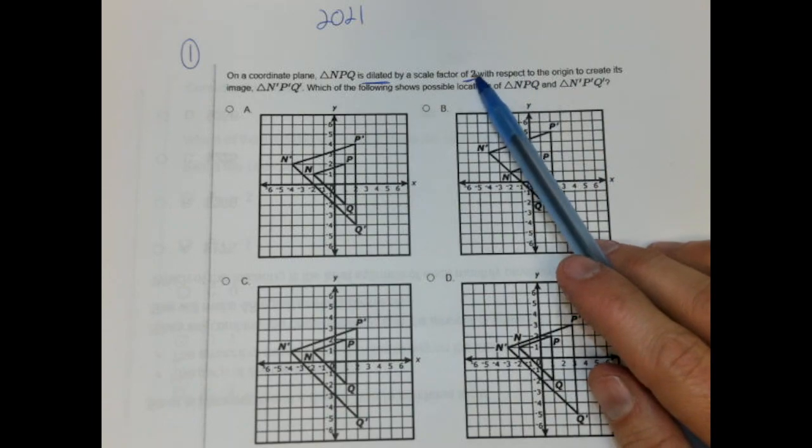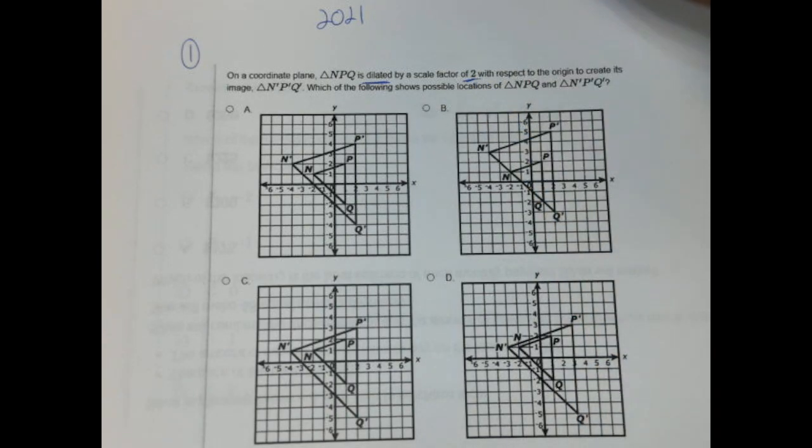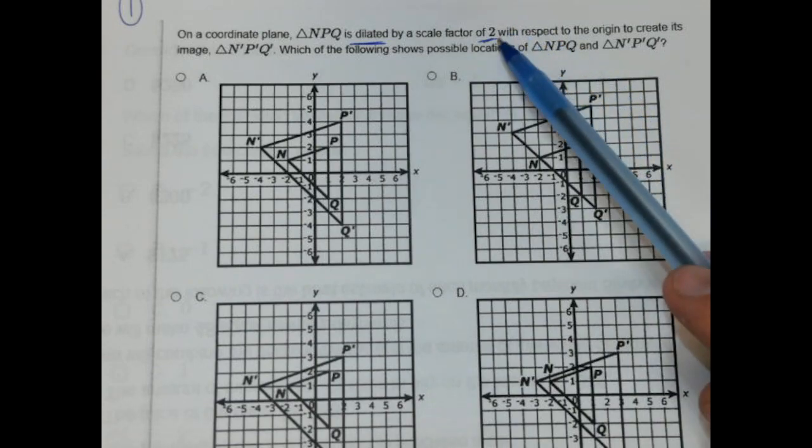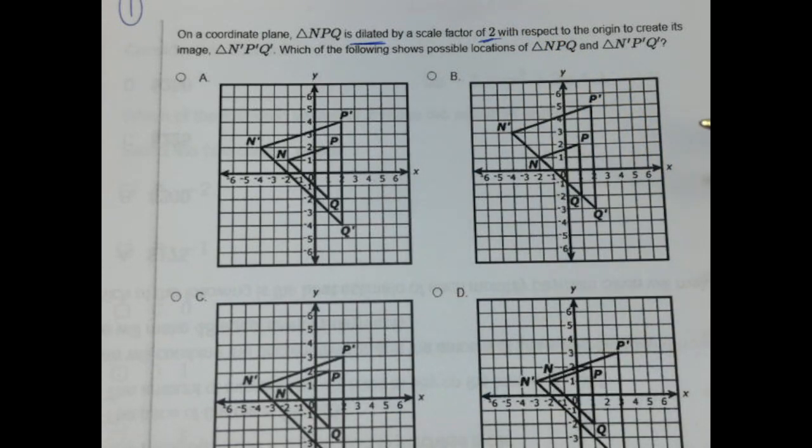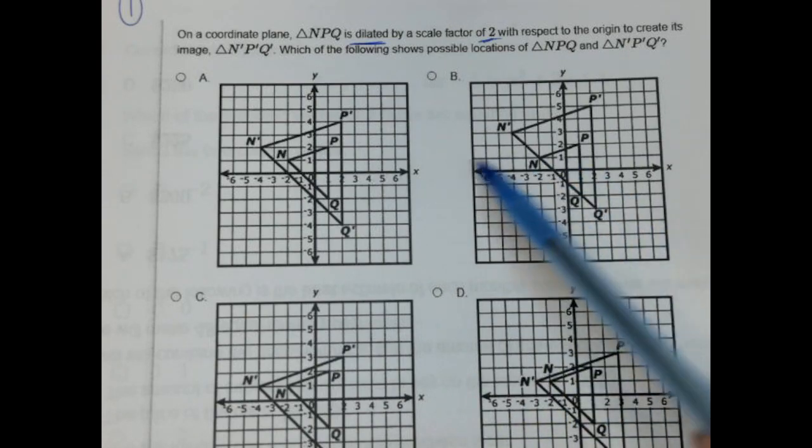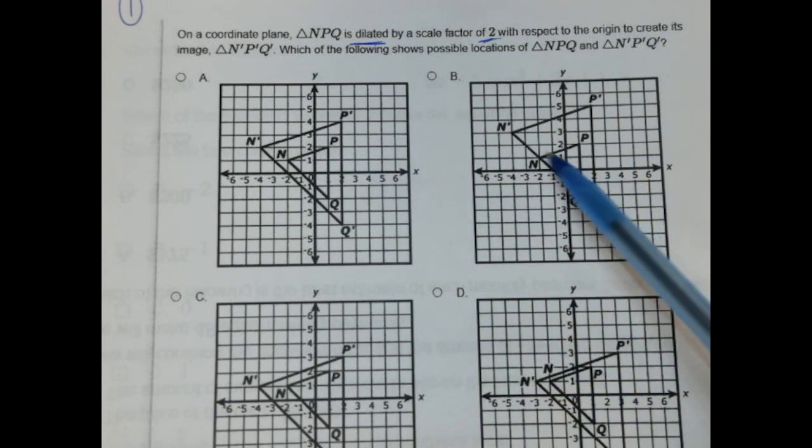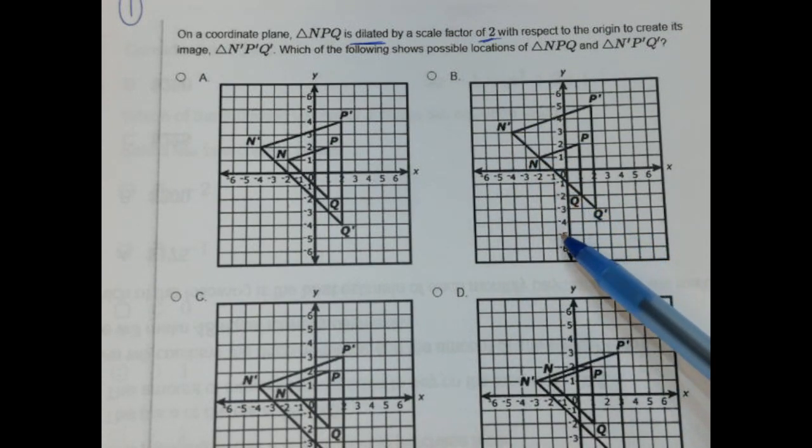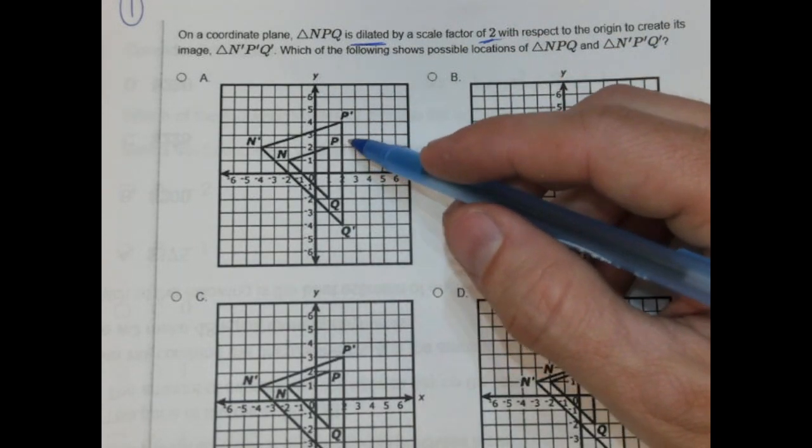Dilations we know result in non-congruent images so long as it's a scale factor other than one. We know the scale factor is two, which means we're doubling the size, and it's with respect to the origin. So that means if it's respect to the origin, we would just multiply the original coordinates. We would multiply the original coordinates of the pre-image by two in order to get the coordinates of the image. Let's take a look at this, see if there's anything we can eliminate.